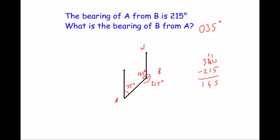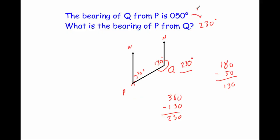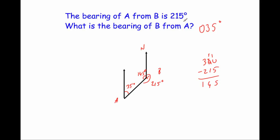I promised I'd show you the shortcut. Looking back at our first question: the given bearing was 98 degrees and the answer was 278 — that's 180 more. We added 180 degrees to find the back bearing. Our second question: starting from 50 degrees, adding 180 gives 230. For the third question, we were given 215, a reflex angle above 180. In that case, to find the back bearing, you subtract 180 instead. So if the bearing is less than 180, add 180; if it's greater than 180, subtract 180.